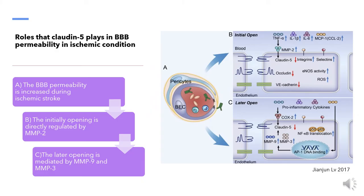Ischemic stroke increases blood-brain barrier permeability with a biphasic opening that leads to brain accumulation of peripheral lipids and toxic proteins. First, pro-inflammatory cytokines evoke MMP2, which regulates the initial opening. The activation of MMP2 contributes to the degradation of claudin-5, while reactive oxygen species generation is increased. The later opening is mediated by the induction of MMP3 and MMP9 through the nuclear factor kB-activated protein 1 signaling pathway.